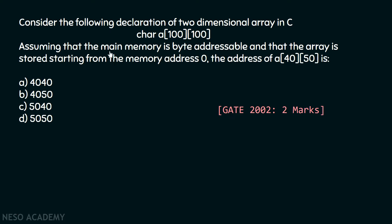Assuming that the main memory is byte addressable, which means that each address corresponds to one byte of memory location, and that the array is stored starting from memory address zero — that means base address is zero. The address of A[40][50] we have to identify. Is it 4040, 4050, 5040, or 5050? This question has been asked in GATE 2002 for two marks.